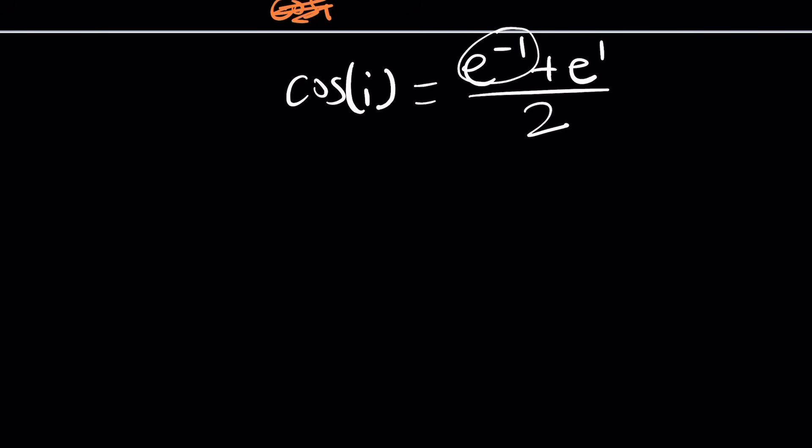e to the power negative 1 just means that 1 over e. So we can write it as 1 over e plus e divided by 2. And then when you make a common denominator, just multiply the top and bottom by e, you'll get e² plus 1 divided by 2e. So that should be the answer, right?